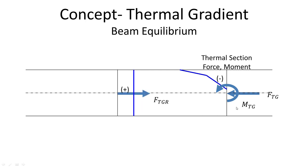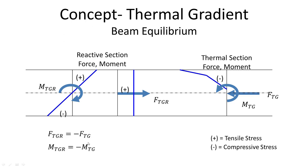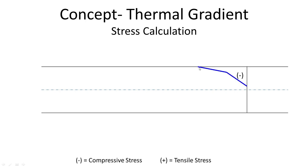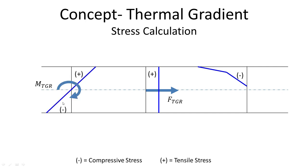In order for the beam to maintain equilibrium, it has to generate an equal and opposite force and moment. Let's call this force FTGR, or reactive thermal gradient force, and the moment MTGR, or reactive thermal gradient moment. These reactive thermal gradient force and moment are equal and opposite to the active thermal gradient force and moment. In summary, there are three stress profiles generated as a result of thermal gradient: the stress profile due to the active thermal gradient force, the stress profile due to the reactive thermal gradient force, and the stress profile due to the reactive thermal gradient moment.